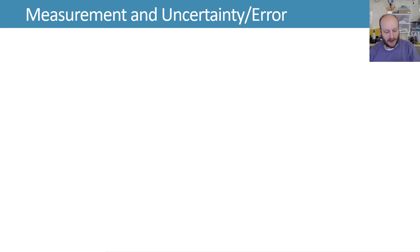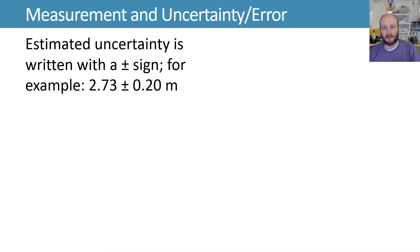To go along with that, we can talk about the uncertainty that we get. So we estimate our uncertainty and we write it with a plus or minus sign. For example, 2.73 might be our measurement, and then maybe our uncertainty is plus or minus 0.20 meters. In general, we won't have more than two digits here in uncertainty. We might just have one, but whatever digits we have here are going to match up with the actual measured value. So if we had 0.2 as our uncertainty, then we would round this to go along with it and call it 2.7 plus or minus 0.2.